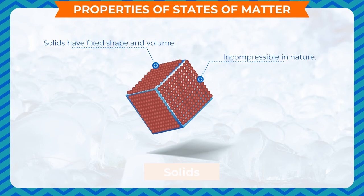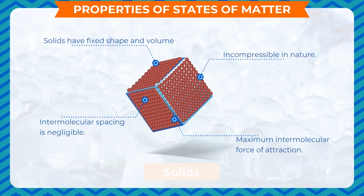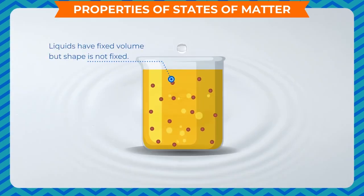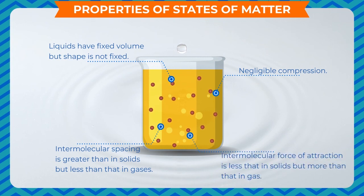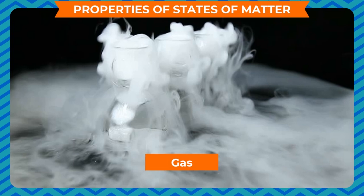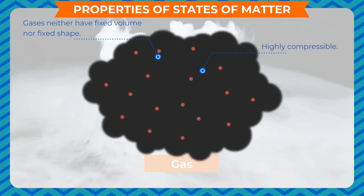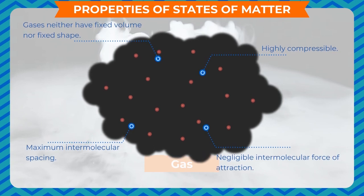Properties of states of matter — Solids: fixed shape and volume, incompressible, negligible intermolecular spacing, maximum intermolecular force of attraction. Liquids: fixed volume but no fixed shape, negligible compression, intermolecular spacing greater than solids but less than gases, intermolecular force less than solids but more than gases. Gases: neither fixed volume nor fixed shape, highly compressible, maximum intermolecular spacing, negligible intermolecular force of attraction.